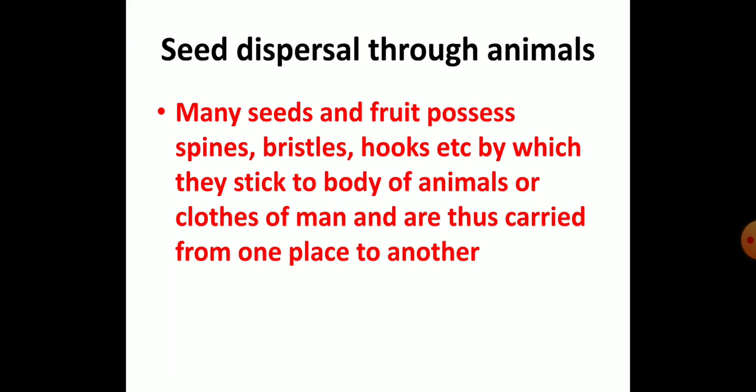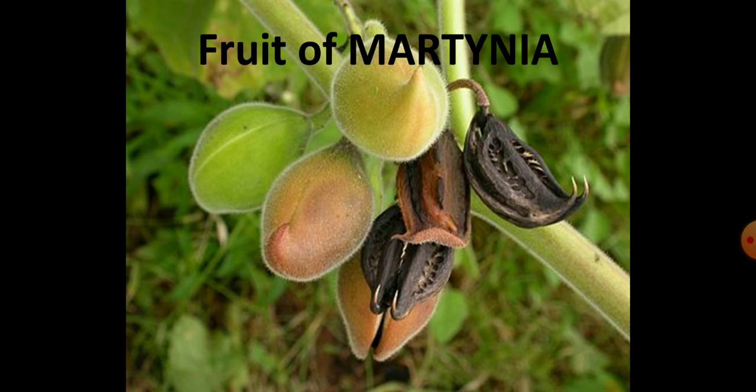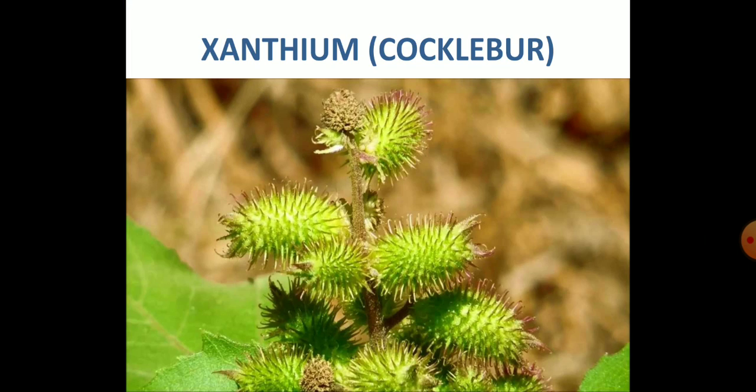Seed dispersal through animals is quite efficient. Many seeds and fruits possess spines, bristles, hooks, etc., by which they stick to the body of animals or clothes of man, and are thus carried from one place to another. For example, fruits of Martynia and Xanthium have hook-like structures by which they get stuck to the body of animals or clothes of man.